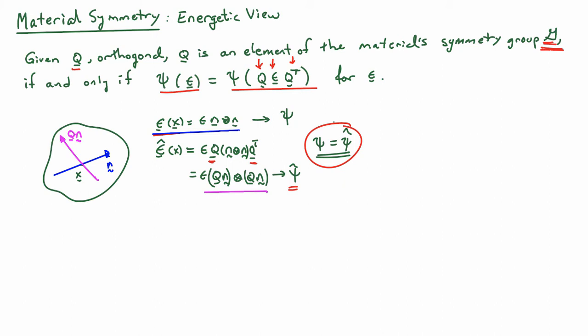Written out in indicial form, I'm going to have one-half epsilon IJ C IJKL epsilon KL is equal to one-half QPI epsilon IJ QJ, which is the application of Q Q transpose to epsilon. Then I'll have CPQRS and then QRK epsilon KL QSL. This needs to hold for all strains epsilon.